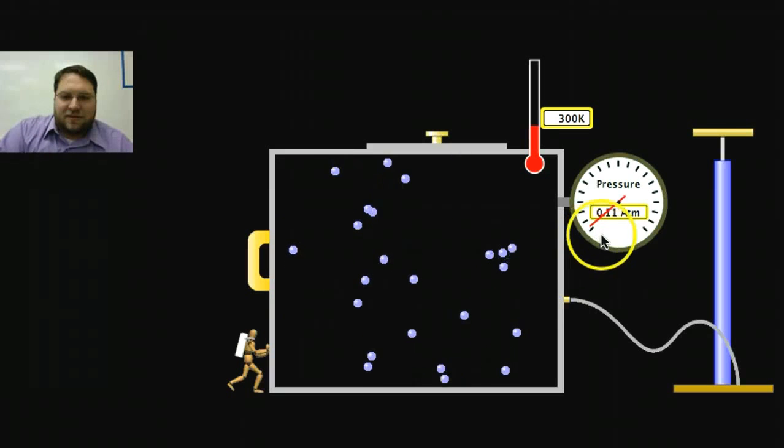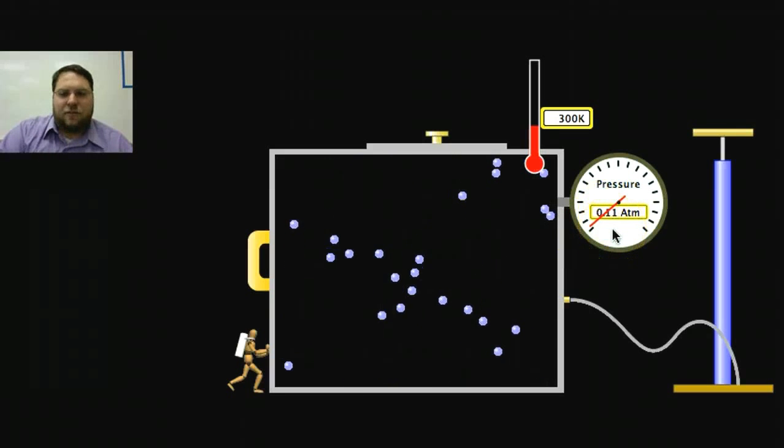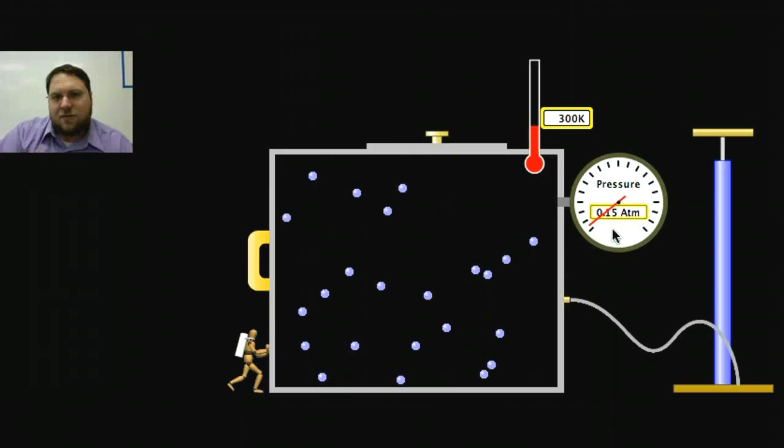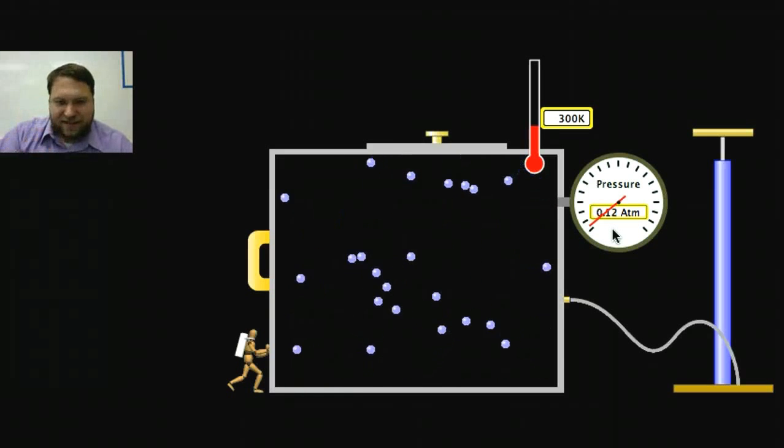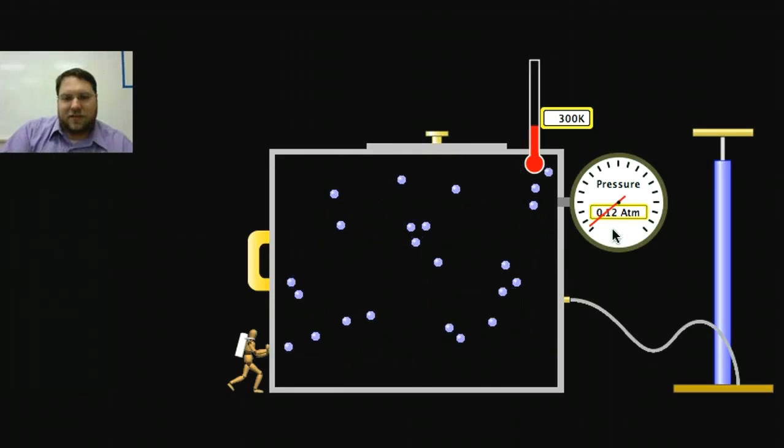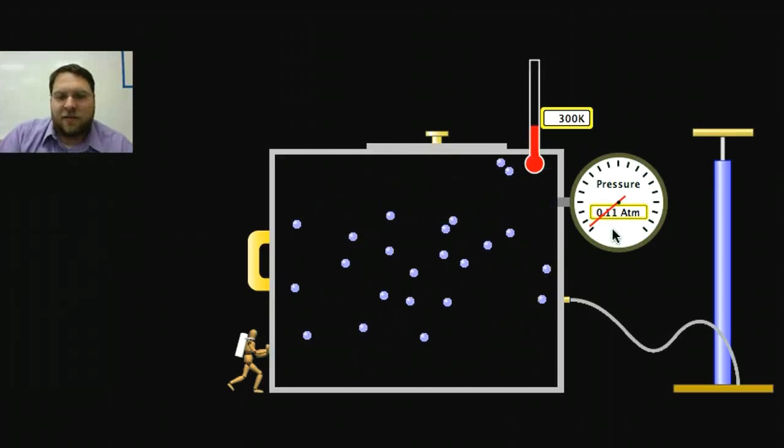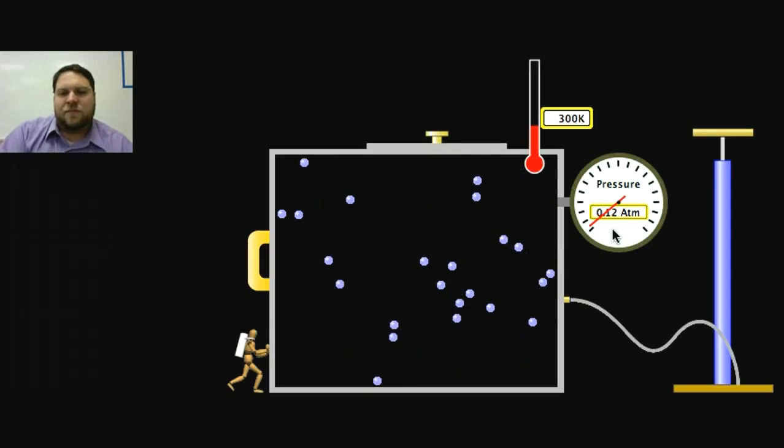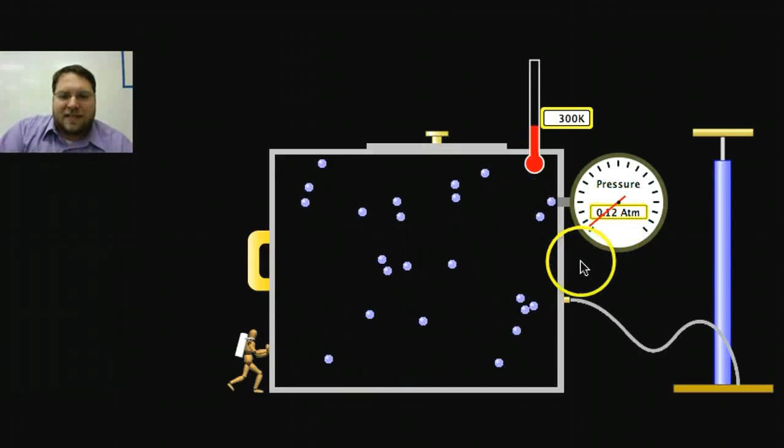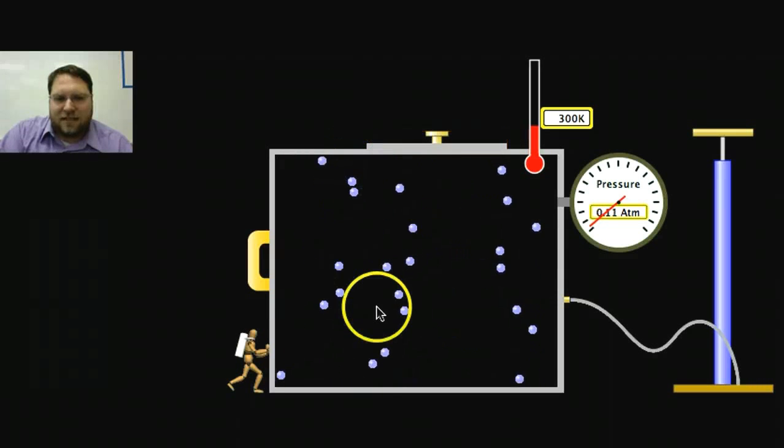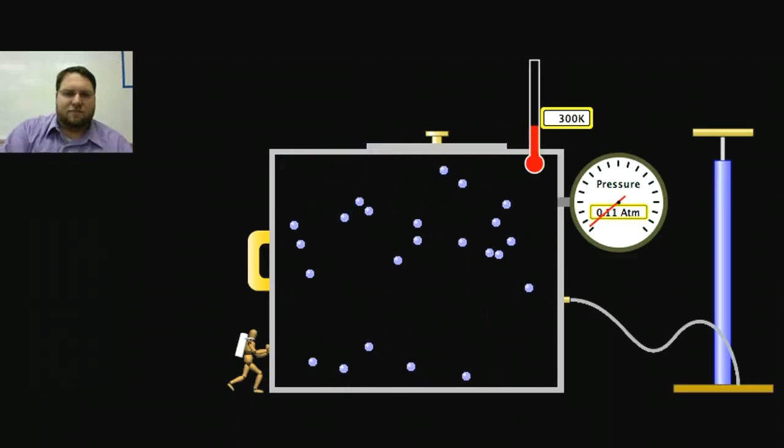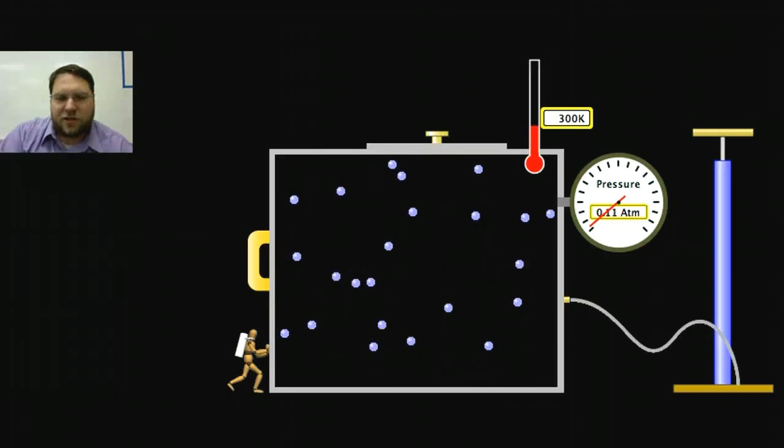Now, you'll notice that the pressure is pretty small, 0.11 atm. Atm is a unit of pressure that stands for an atmosphere. We'll talk more about that later. Typically, we're going to use a unit called the Pascal for our unit of pressure. And here we can see it's a small amount of pressure, and it goes up every time one of these bumps into a wall. And the faster it bumps into it, the greater the pressure.